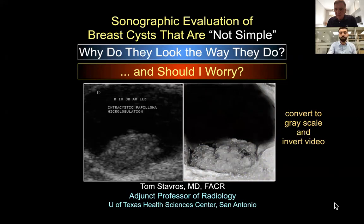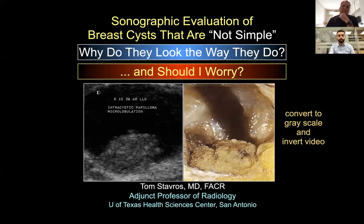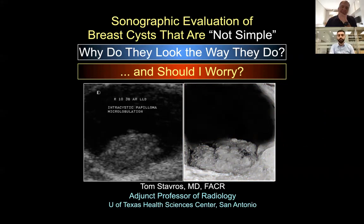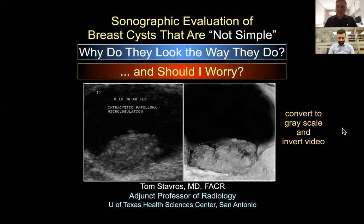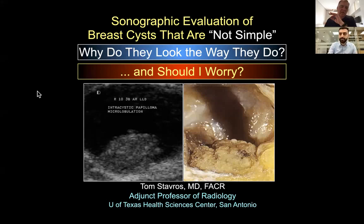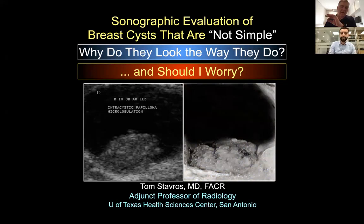Today we're going to talk about breast cysts that aren't simple. We really worry more about cysts than we should in most cases. The vast majority are just part of benign fibrocystic change or benign proliferative changes. I'm going to show you pathology images and then convert them to grayscale and video-invert them—so white becomes black and black becomes white—which makes them look very much like ultrasound images, helping you understand what you're seeing.